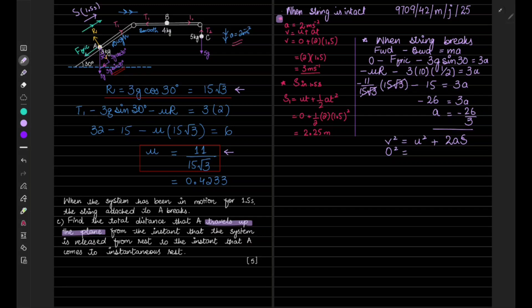Final velocity is zero because it comes to instantaneous rest. And initial, we know it to be moving with 3 meters per second when the string breaks. So 3 squared plus 2 times minus 26 over 3 times s, that we need to find.